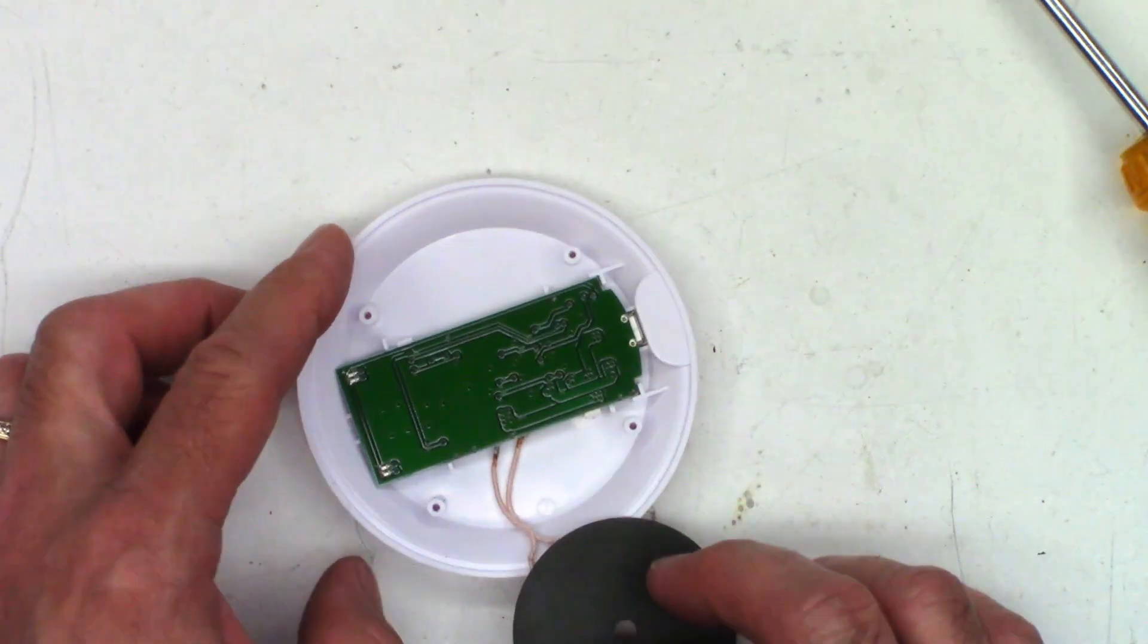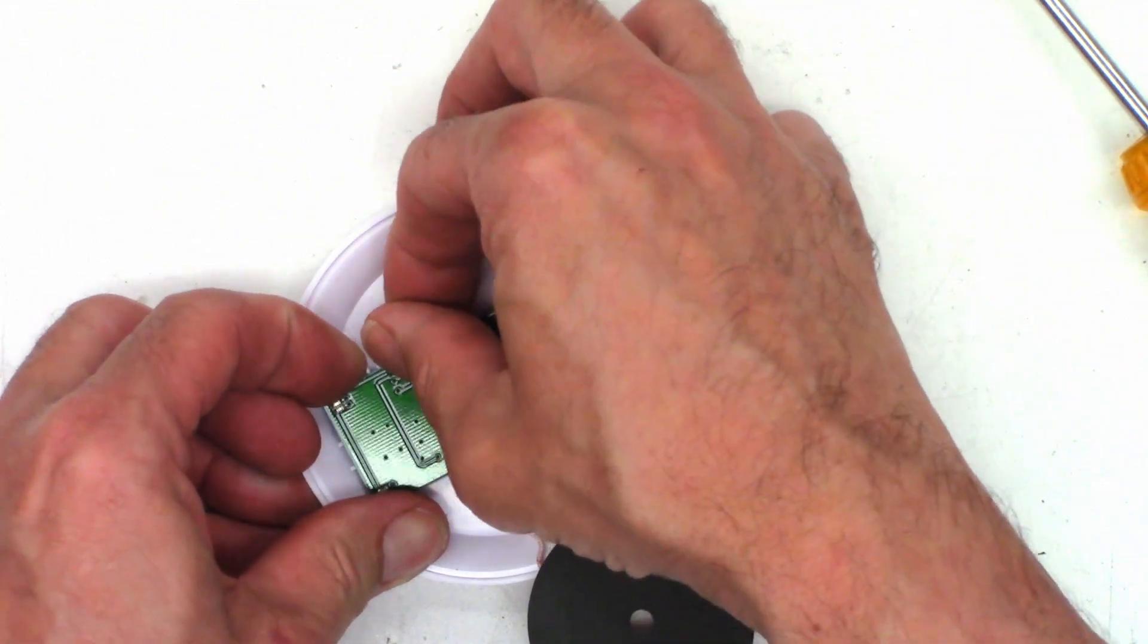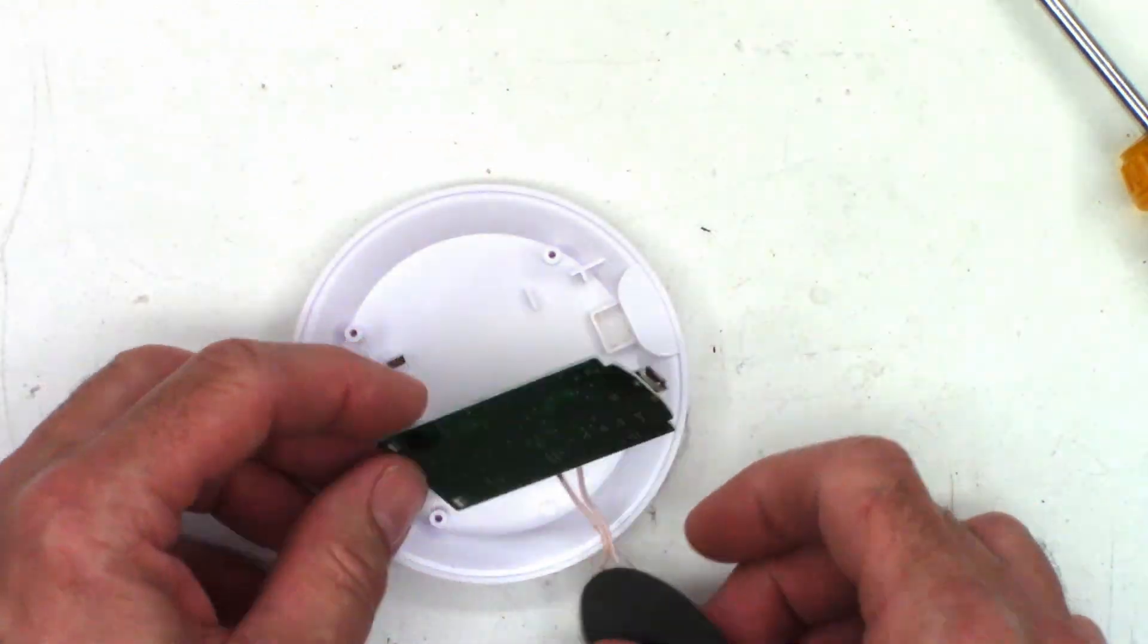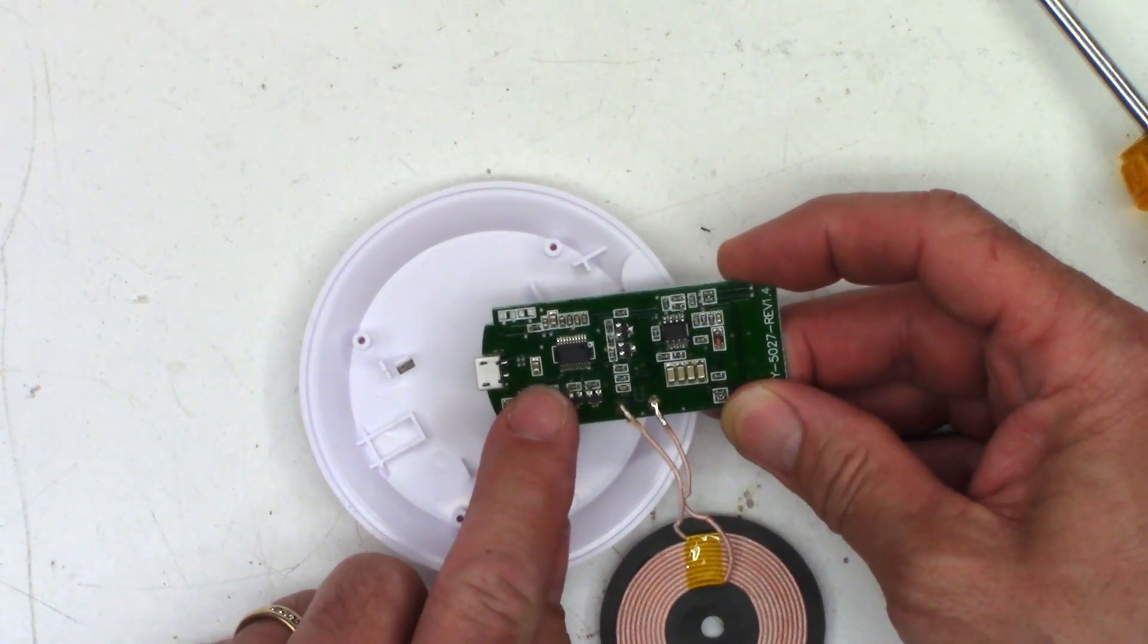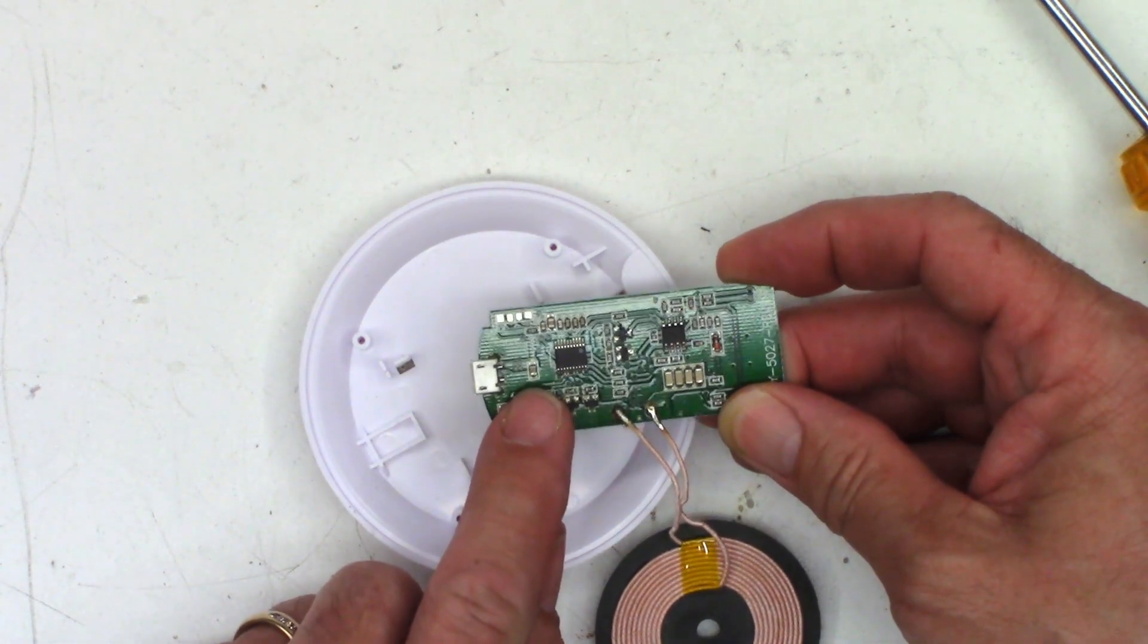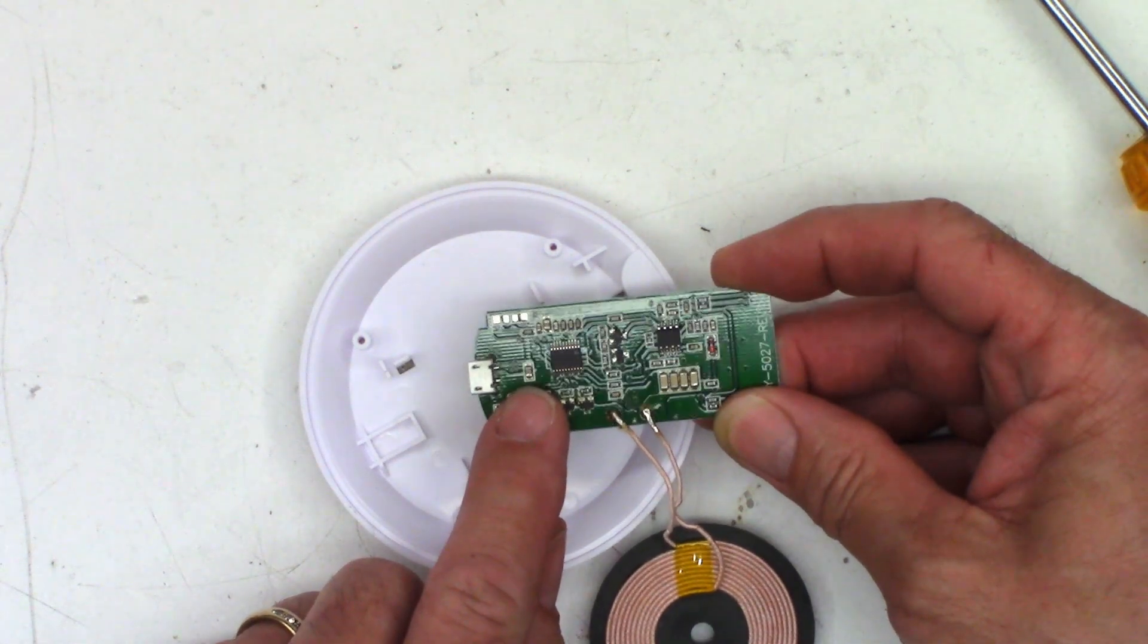Now the circuit board just unclips out of here. And so there's what we're interested in. So what I'm going to do is I'm just going to go ahead and attach the cable to this bypass capacitor right here.